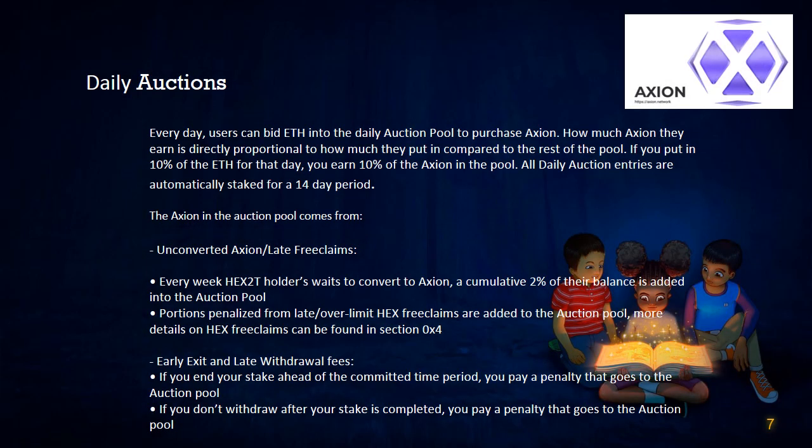The daily auction — putting tokens and value into your pocket. To get Axion, it needs to be claimed by HEX2T holders. The longer they wait to claim, the more penalties they face — about 2% of their total per week. This 2% is added into a daily auction pool where people can bid using ETH on the Axion tokens within it. If you bid 10% of the ETH on that day, you get 10% of the pool rewards. 80% of the ETH paid in the auction is then used to hyperdrive both the Axion token and stakers' earnings. First, the ETH is used to purchase the tokens, boosting the token price, and then those tokens are distributed to stakers, creating a very strong positive feedback loop.